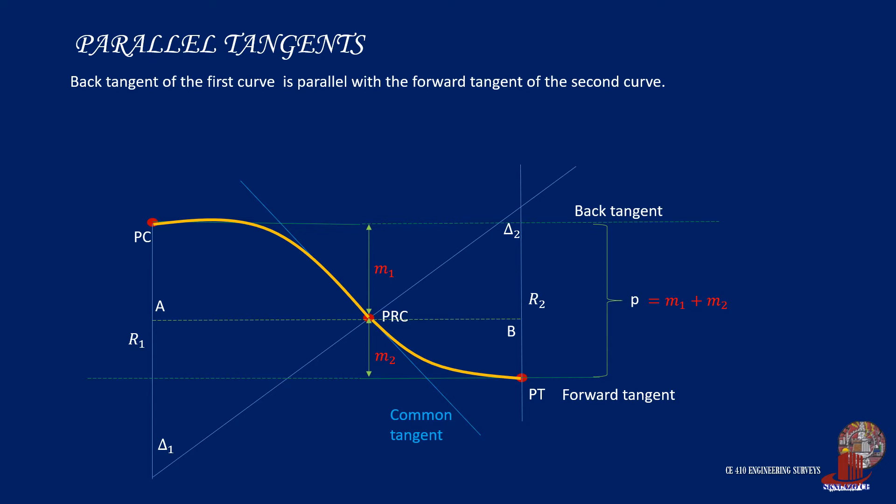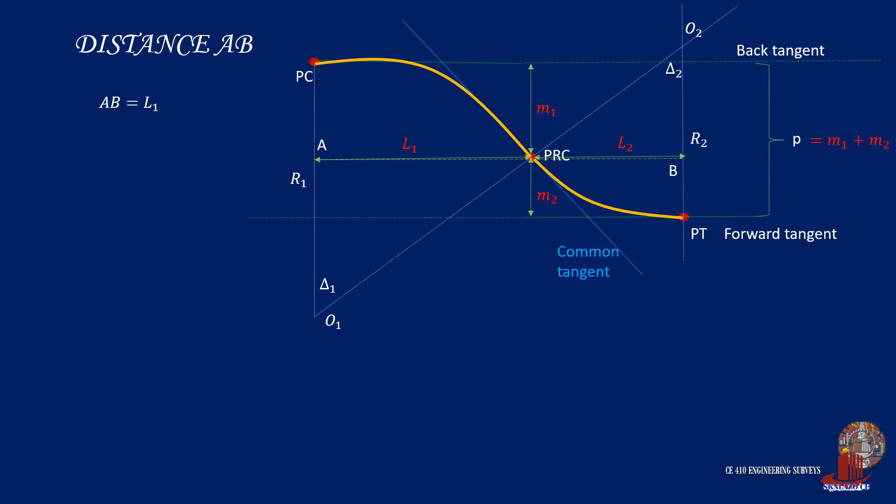The distance between the PC and PT is denoted as AB, which is computed as L1 plus L2. The distance between the PC and the PT can be derived by projecting the distance of PC to the PRC and so is PT, so we can say that distance AB is equal to L1 and L2.